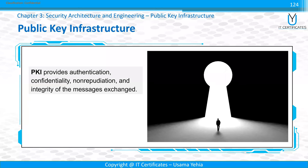The public key infrastructure provides authentication, confidentiality, non-repudiation, and integrity. Authentication means making sure the message is coming from a specific person. Usually it will be used if the message is encrypted by a private key, because the private key will not be shared with anyone other than the user himself. Confidentiality means encryption of the data.